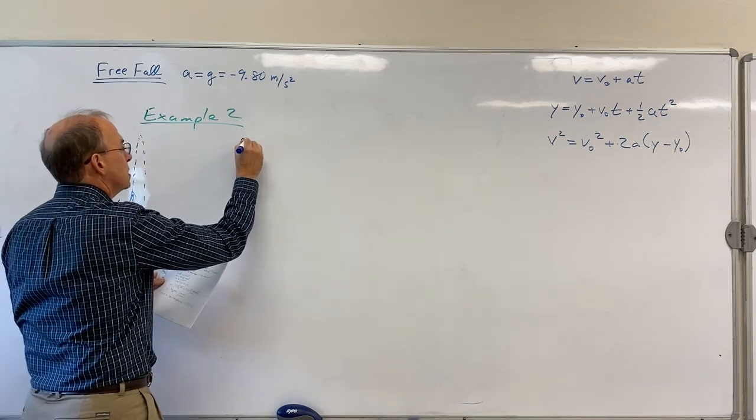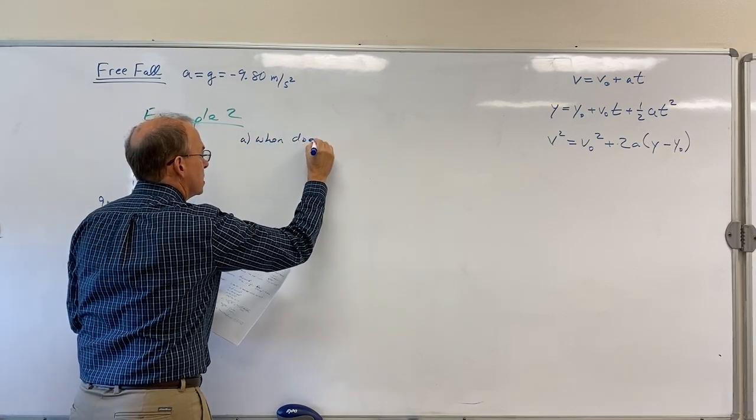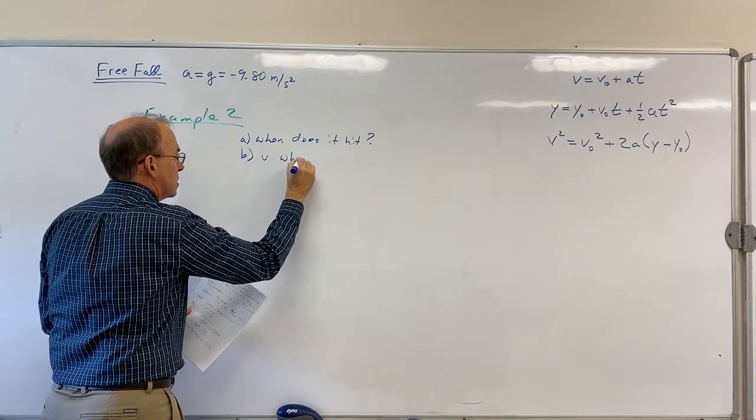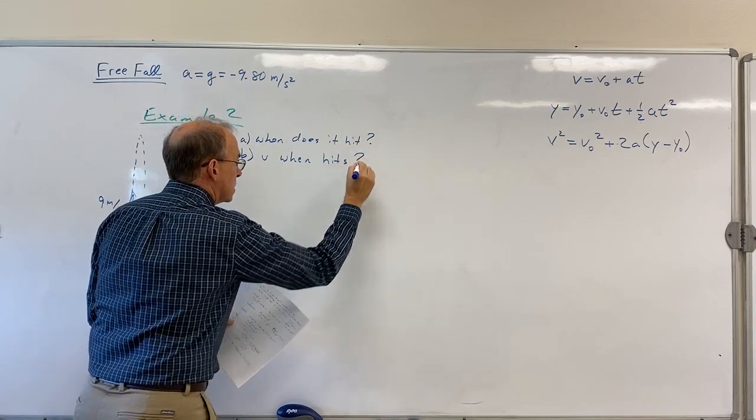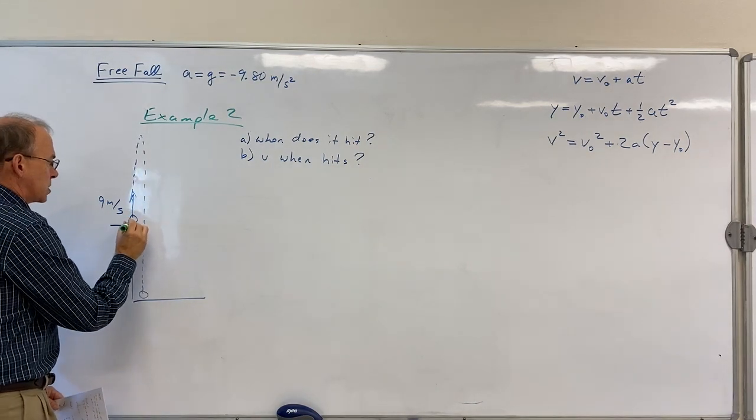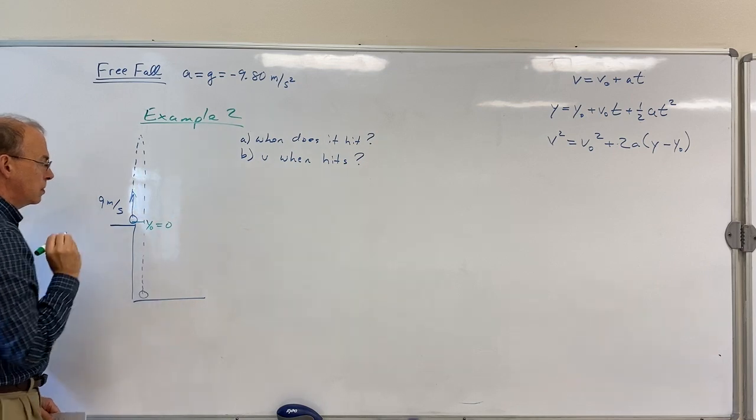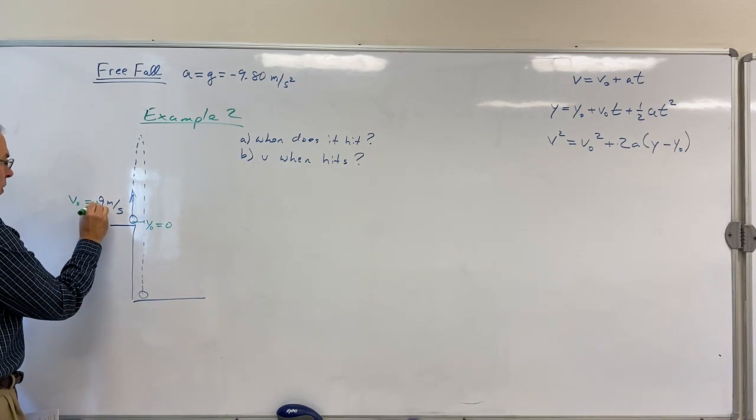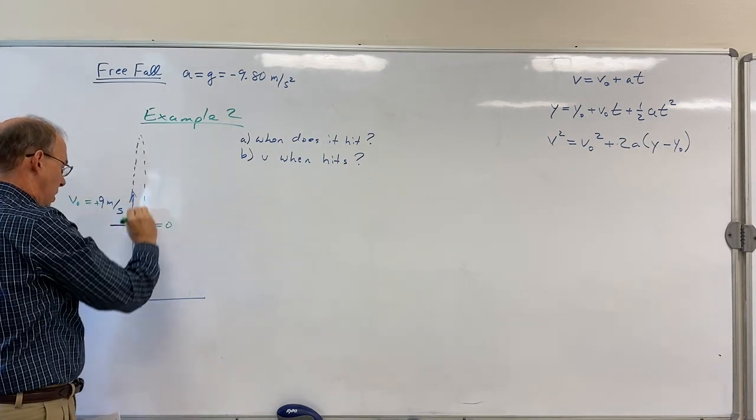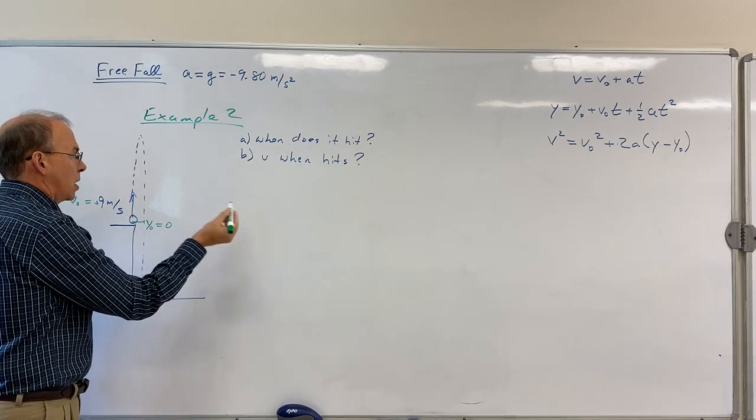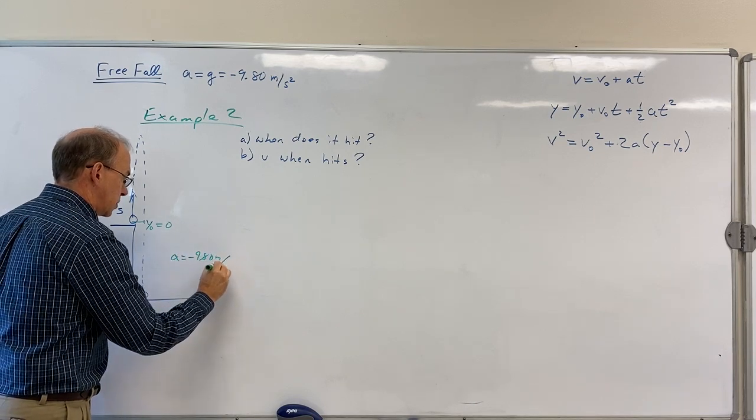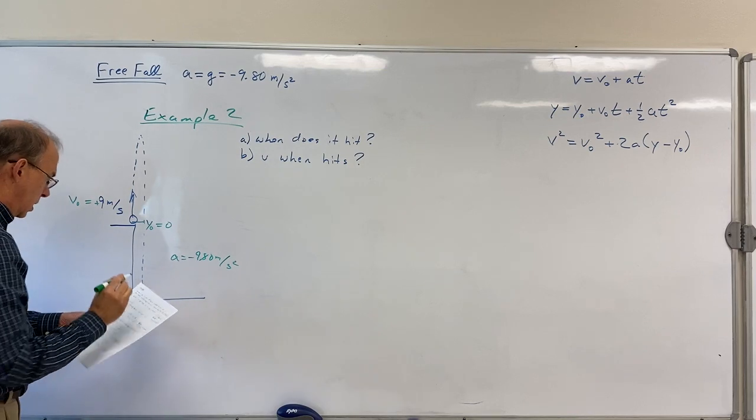When does it hit? So the time when it hits. And the velocity when it hits. Let me come over here and label what I know. I'm going to let its starting point be y₀ = 0. I'm going to let v₀ be plus 9 meters per second. It's going to go up in the air, go up, go down. And the only other bit of information I know is that a is -9.8 meters per second squared. Oh, I have to know how high the cliff is. That's an 8 meter cliff.